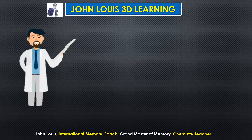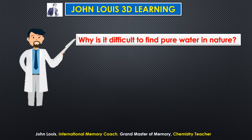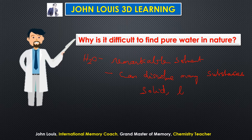As usual let us begin with a question. Why is it difficult to find pure water in nature? Because water is a remarkable solvent — it can dissolve many substances. The substances may be solid, liquid, or gas. All three states of matter can be dissolved in water. That is why it is very difficult to find pure water in nature; it can very easily dissolve anything which comes in contact.